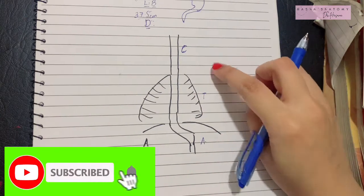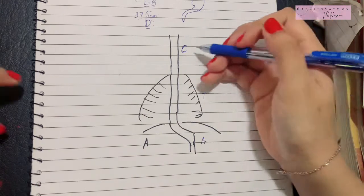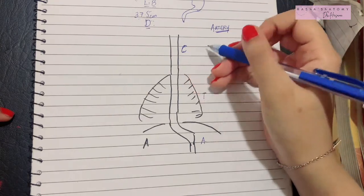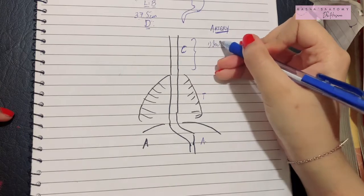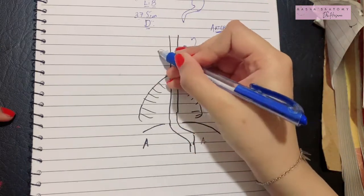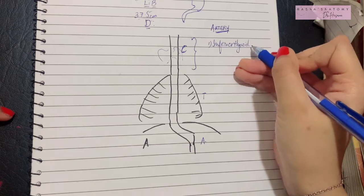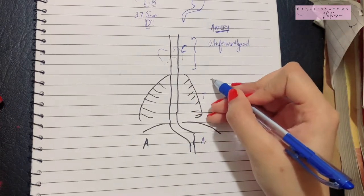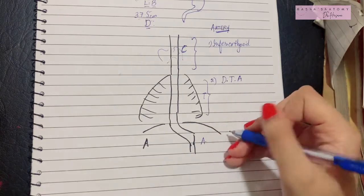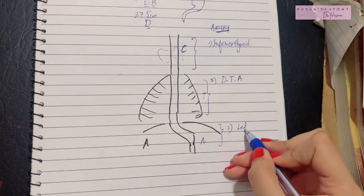Let's discuss the arterial supply. The cervical part of the esophagus is supplied by the inferior thyroid artery, because at the cervical level the thyroid gland lies in front of the trachea. The thoracic part is supplied by esophageal branches of the descending thoracic aorta. The abdominal part receives its arterial supply from esophageal branches of the left gastric artery.